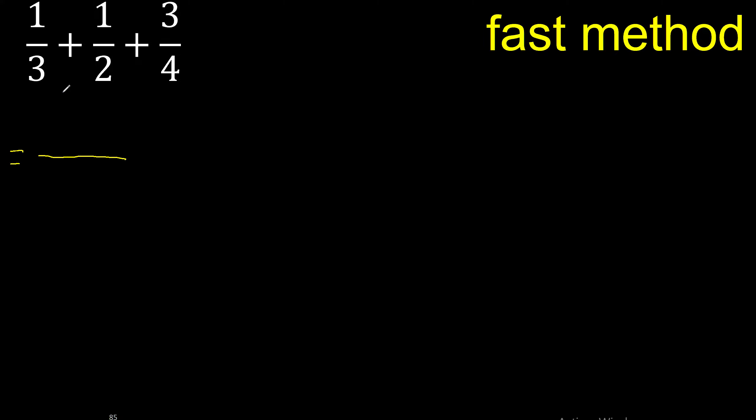First multiply: 3 x 2 = 6, then 6 x 4 = 24.